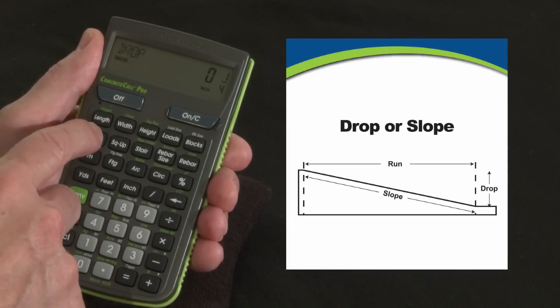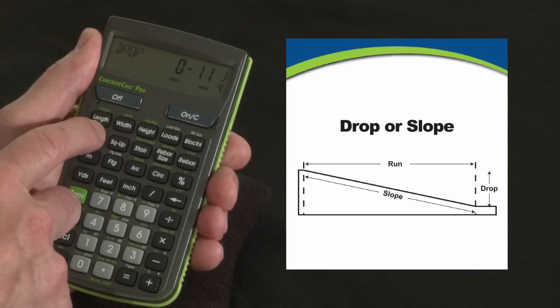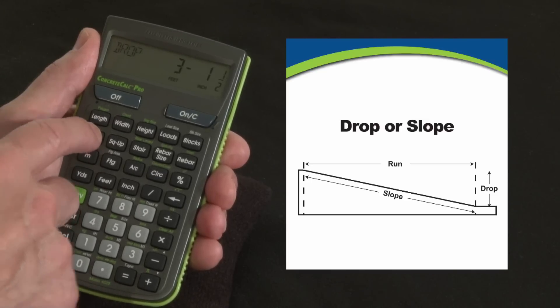And so for the first drop, the first stake, it's going to be 3 and 3 quarters inches lower. Press it again, that's your second stake, 7 and a half. So it's accumulating the drop. So next one's 11 and a quarter, next one you're down to 1 foot 3, 1 foot 6 and so forth, all the way down the line until you get to that final end destination.